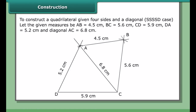To construct a quadrilateral given four sides and a diagonal — the SSSSD case — let the given measures be AB = 4.5 cm, BC = 5.6 cm, CD = 5.9 cm, DA = 5.2 cm, and diagonal AC. The two triangles we can construct to complete the quadrilateral are triangle ADC and triangle ABC.